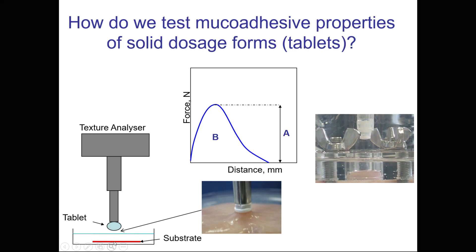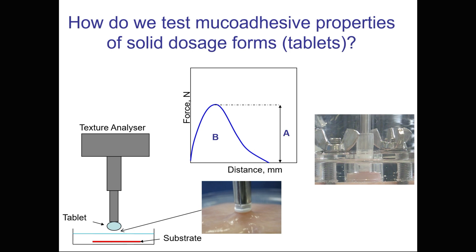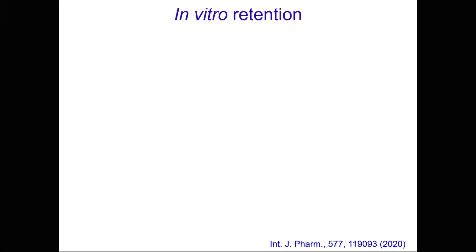We place the tablet in contact with the substrate, leave it for a few seconds, and then lift the probe up and measure the force required to detach the probe. The instrument records a curve by measuring force as a function of distance. We calculate two parameters: the maximum force required to detach the tablet, and the area under this curve, which is the total work of adhesion.